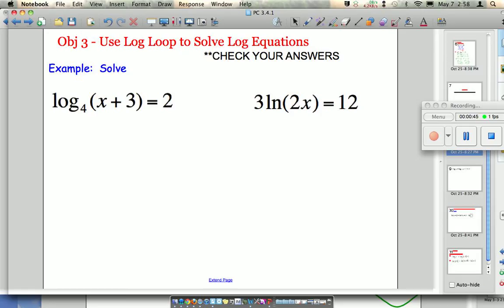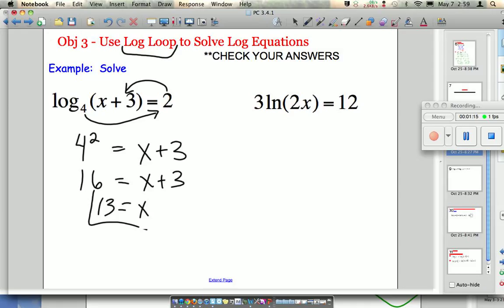The good news is it's a very simple process. We're going to use what's called the log loop, and that's simply rewriting this in exponential form. So I'm going to rewrite this as 4 to the second power equals x plus 3. That is an equivalent statement because of the definition of log. So x is 13. It's that easy sometimes. Notice how simple this was to begin with. It was just one simple log expression.